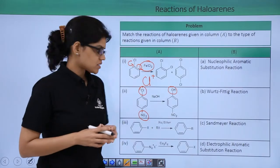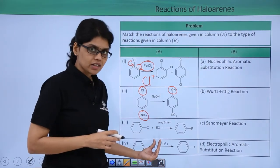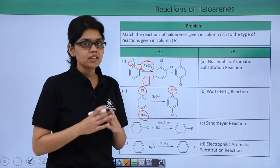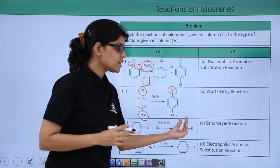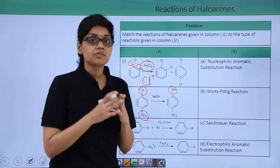Now let us look at the third reaction here which is reaction of a haloarene with a haloalkane in the presence of sodium and ether to give us an alkylarene. So this is nothing but what happens in a Wurtz-Fittig reaction.